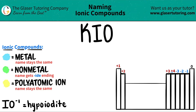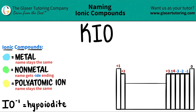Today we are going to be naming the ionic compound KIO. As a trick, if you see that you have an ionic compound with three or more different elements, you know that you have at least one polyatomic ion in there. So it's always easiest to identify the polyatomic ion and then work from there.